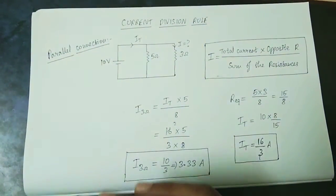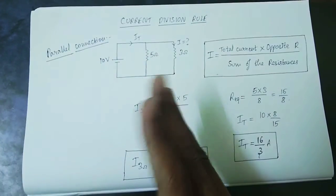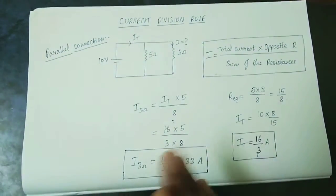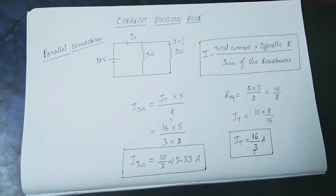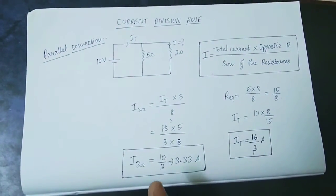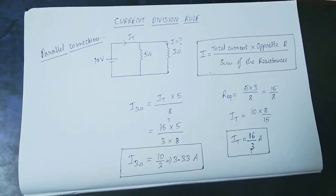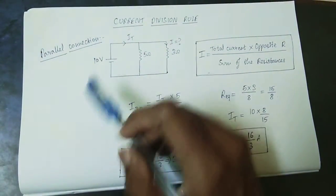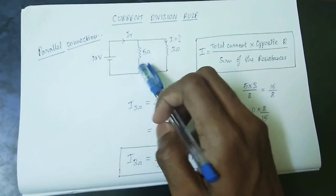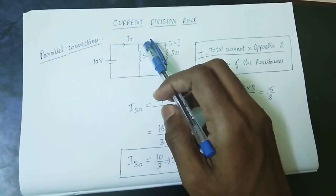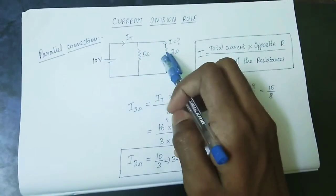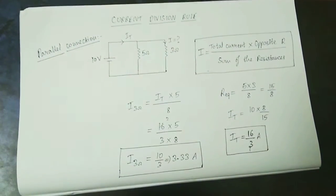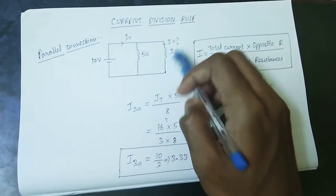In a parallel connection, R1, R2, and R3 carry different currents — current flowing through each resistance depends on its value. For the current division example: total voltage is 10V, with 5 ohm and 3 ohm in parallel.